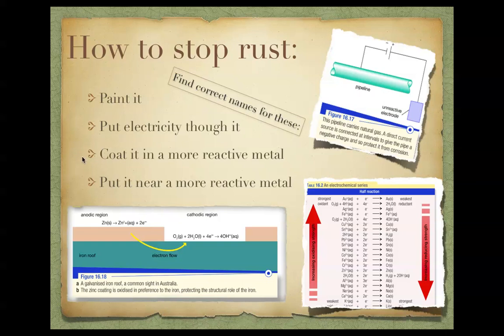What we can do is coat it in a more reactive metal and what will happen is the more reactive metal will react instead of the iron. So if we coat some iron with some zinc, what will happen is that zinc will form zinc hydroxide but the iron will stay as iron. This is called galvanising the iron.